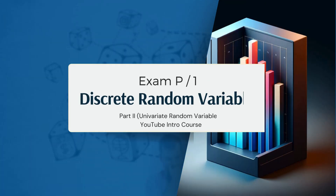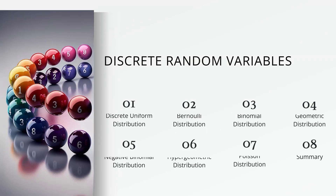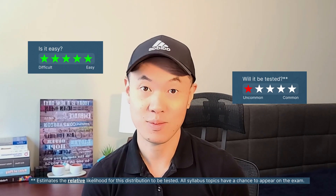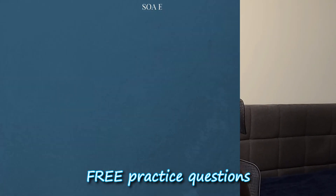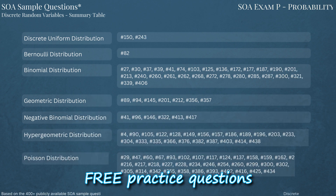This video is going to cover the seven types of discrete random variables tested on exam P. For each of the distributions covered, we're going to go over how easy it is to learn, how likely it is to appear on the exam, and where you can find your free practice questions for each of the distributions.